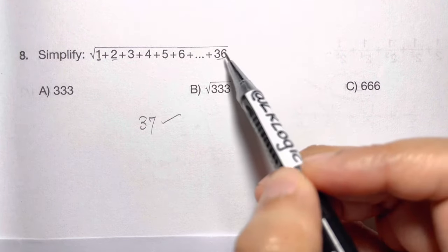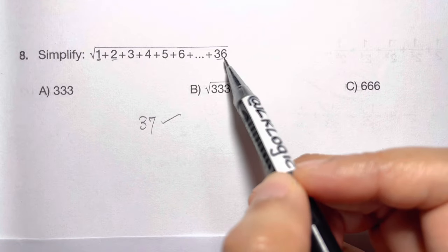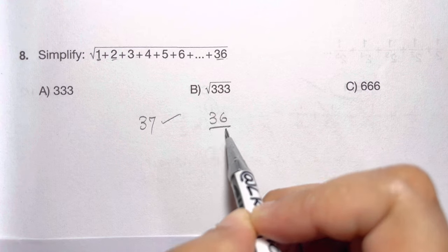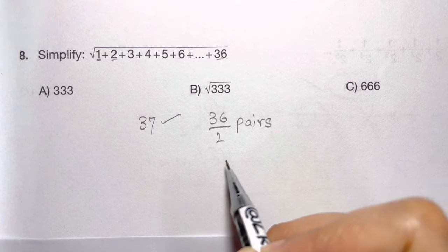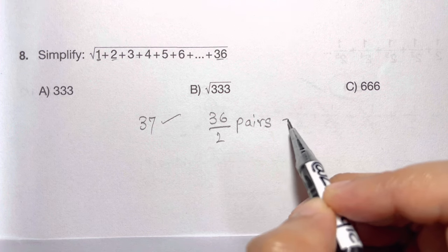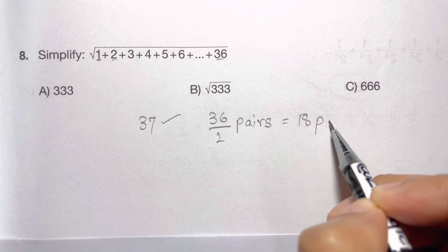Now let's see how many pairs are there. 36 divided by 2 - that many pairs you have. 36 divided by 2 is 18, that means you have 18 pairs.